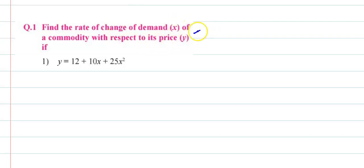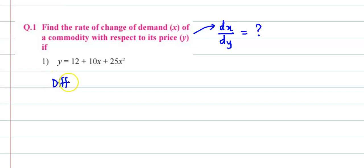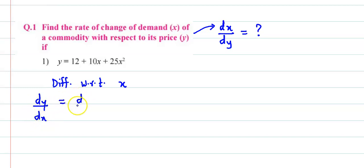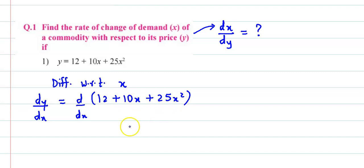یہاں پہ ہمیں obtain کرنا ہے dx by dy — یہ ہمیں ڈھونڈنا ہے. So پہلے اسے ہم differentiate کرتے ہیں with respect to x. So differentiating with respect to x, we have dy by dx is equal to derivative of 12 plus 10x plus 25x squared.